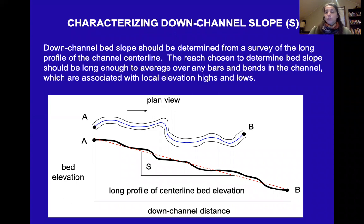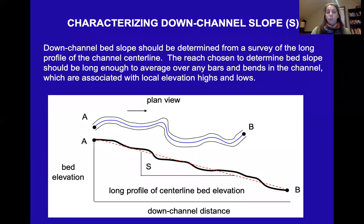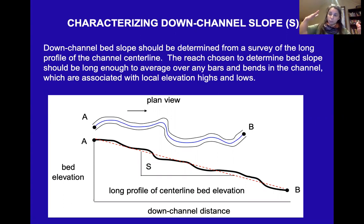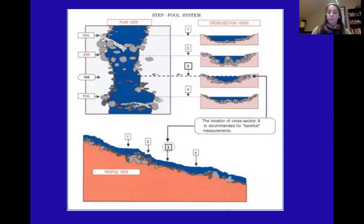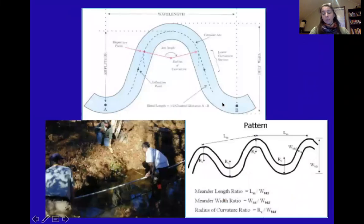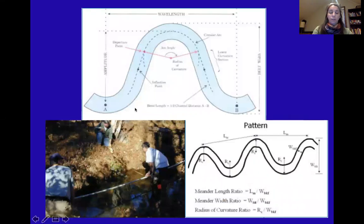For slope in the Rosgen classification system, slope is the change in bed elevation over distance along the stream. You survey a stream profile over a reach long enough to capture any bends in the channel. We also look at pools and riffles — their profile and bankfull measurements — as well as meander length, meander width, meander width ratio, and radius of curvature.